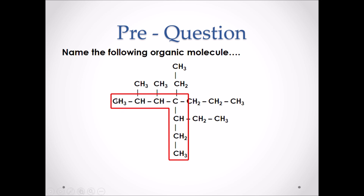We would number it from this point as one, two, three, four, five, six, seven. We then have two different methyl branches — methyl because they each have one carbon in them. We also have two ethyl branches, ethyl because there are two carbons in those branches. And we also have a propyl branch, which contains three carbons.